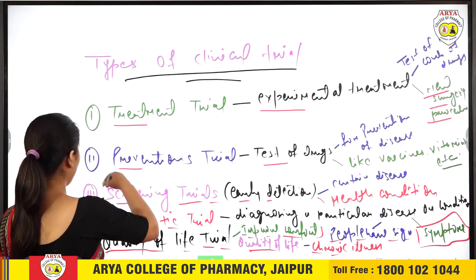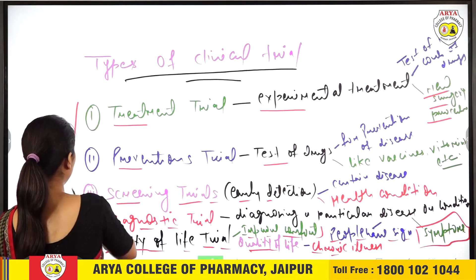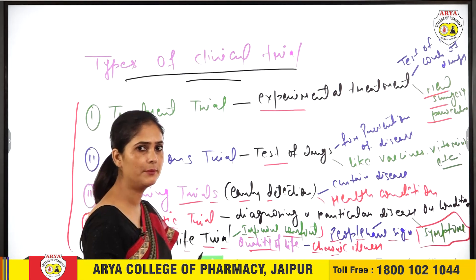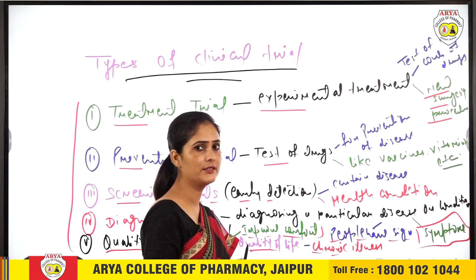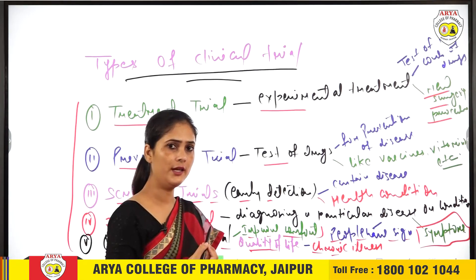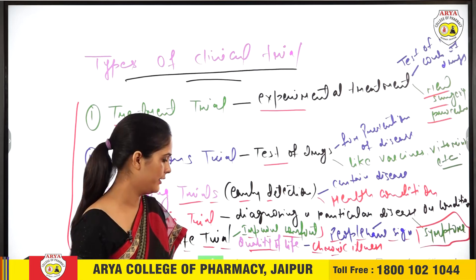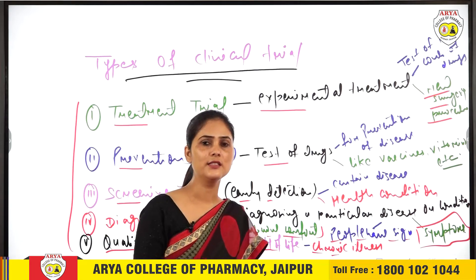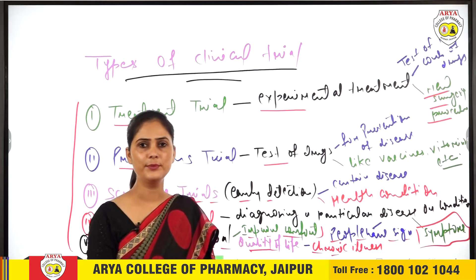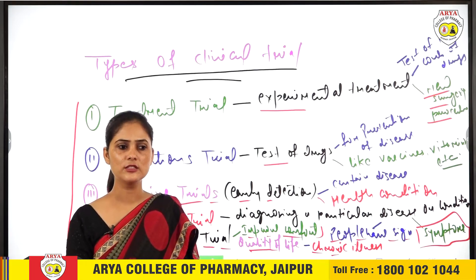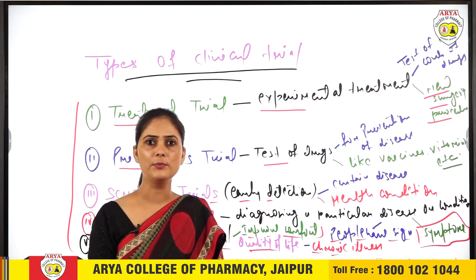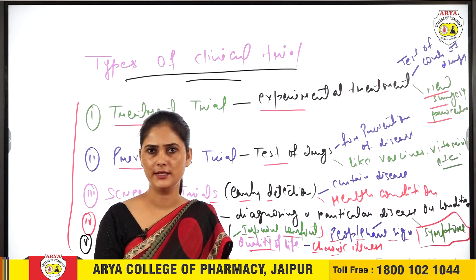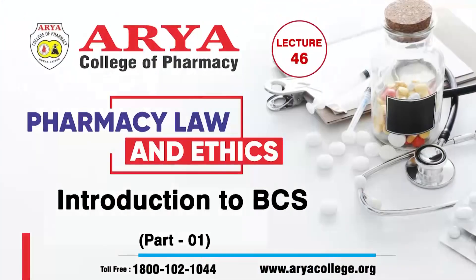So these are the five different types of trials used in clinical trials. आज की class complete हो गई है — next जो भी remaining parts हैं इस chapter के, वो next class में पढ़ेंगे। Thank you.